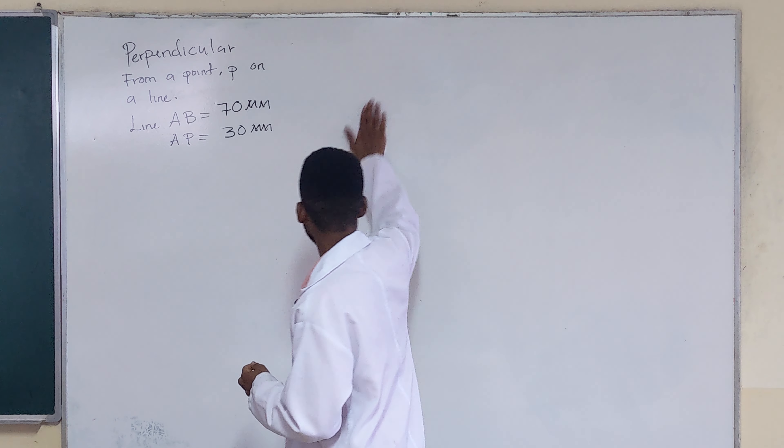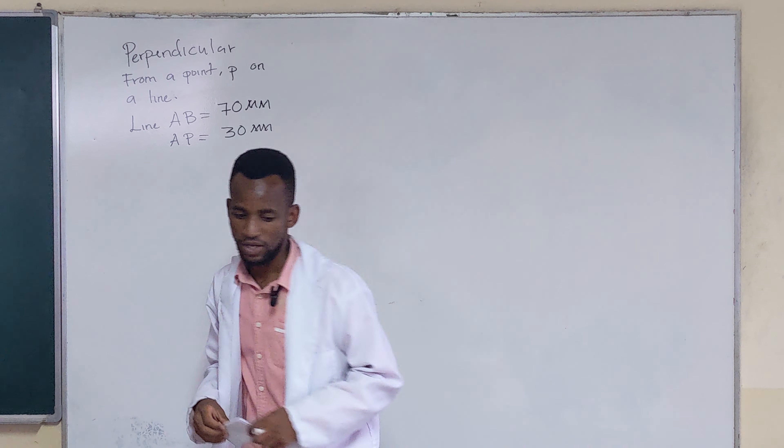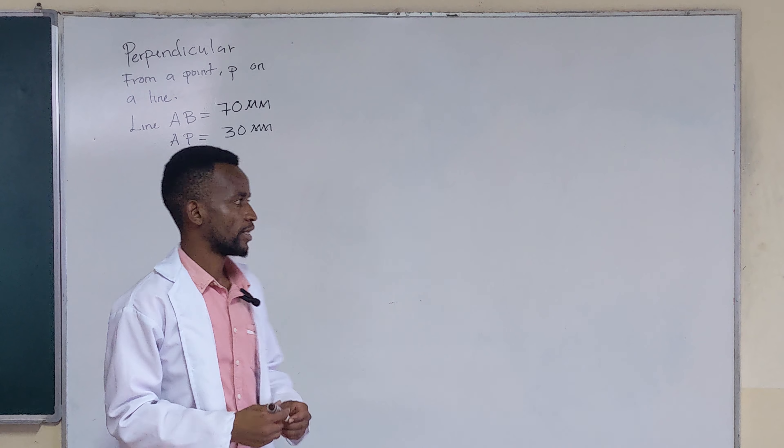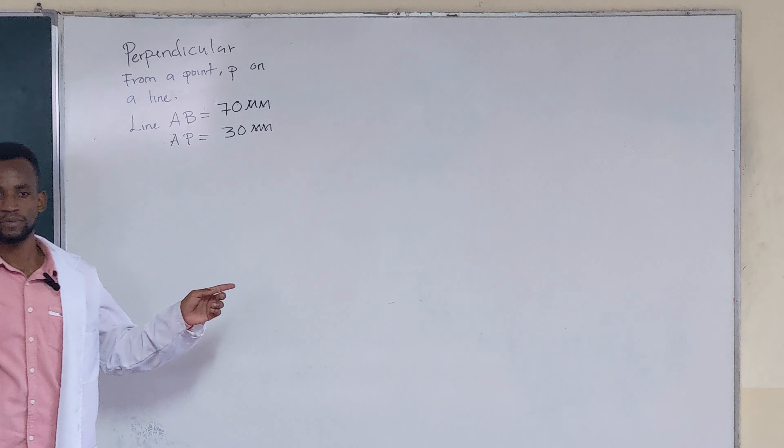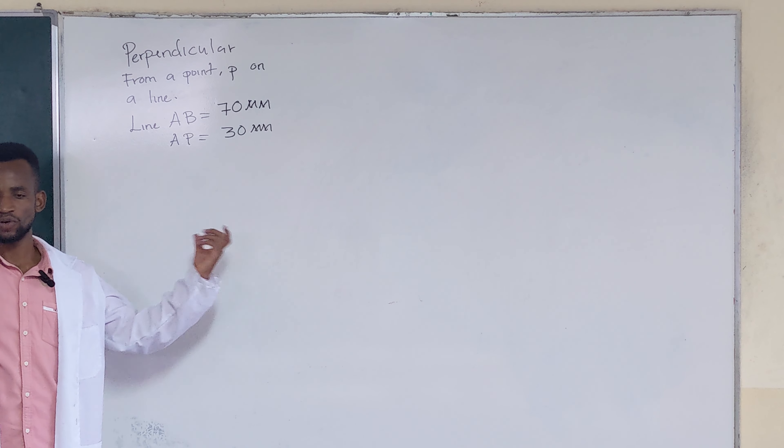Okay, so let's draw the given line. Here we are going to draw a perpendicular line on line AB, but it has to come from point P. So we draw line AB, and then we locate point P there.